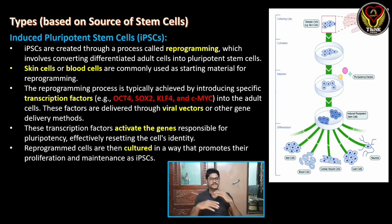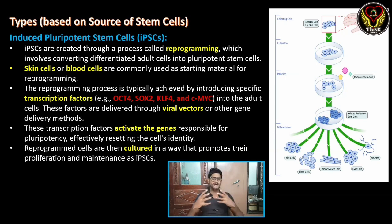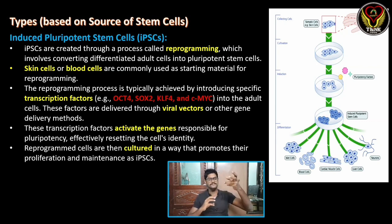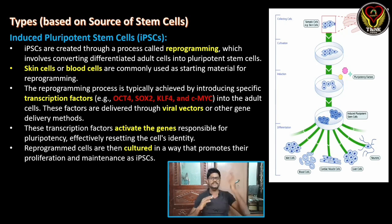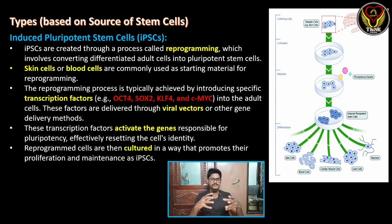Normally, there is a somatic cell — a body cell or a specific differentiated cell. What we do is reprogramming. Normally, different cells are differentiated into specific cell types. But if we go in reverse, we do reprogramming — for example, taking skin cells or blood cells in culture.